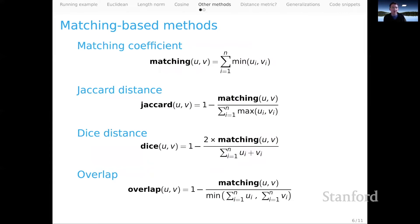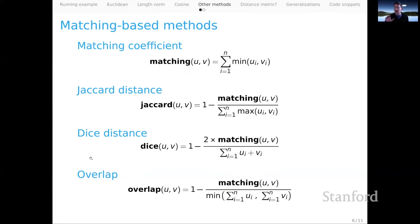There are a few other classes of methods worth mentioning in case they come up in your reading or research. The first class are matching-based methods, all grounded in the matching coefficient. Jaccard and Dice overlap are terms you might see in the literature. These are often defined only for binary vectors, but I've given their generalizations to the real-valued vectors we're discussing here.